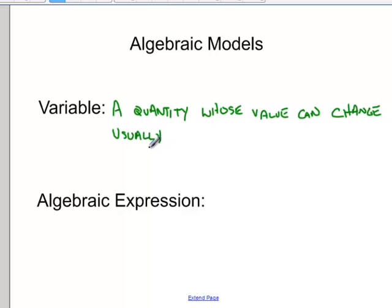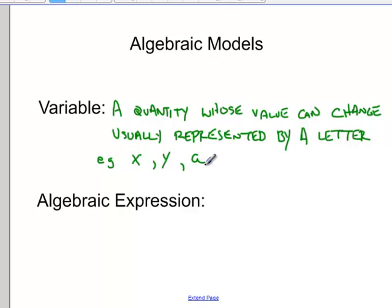Usually when we're talking about variables we represent them with a letter. So x is what people usually think of when they think of variables. Could be the letter y. Could be the letter a. Those are all examples of variables.